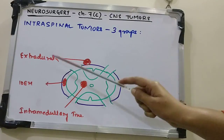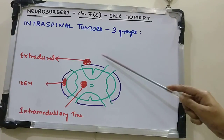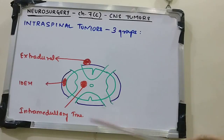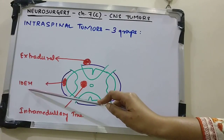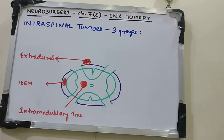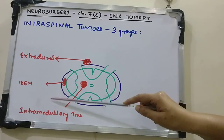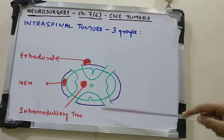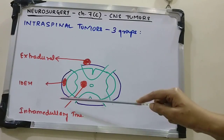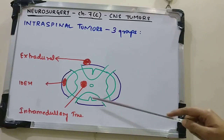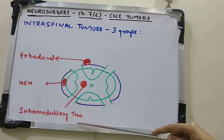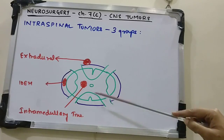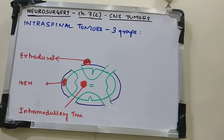Extradural tumors lie outside the dura mater. Intradural extramedullary tumors are inside the dura mater but outside the spinal cord parenchyma. Intramedullary tumors are inside the proper spinal cord substance.